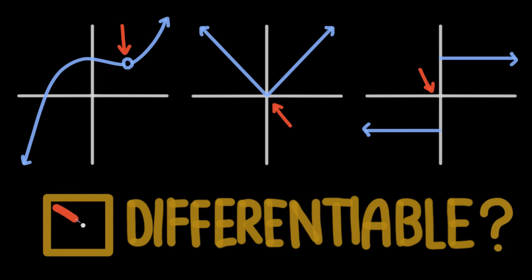Therefore, these are all examples of non-differentiable functions, because they all contain at least one point where we can't find the derivative of the function. And that brings up the point that there's a difference between differentiable at a specific point and differentiable everywhere. A function can only be differentiable everywhere if it's differentiable at every single point. That's why these singular points disqualify each function from being differentiable.